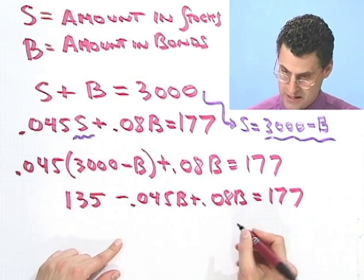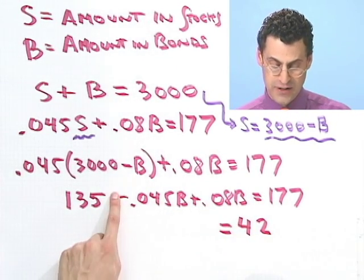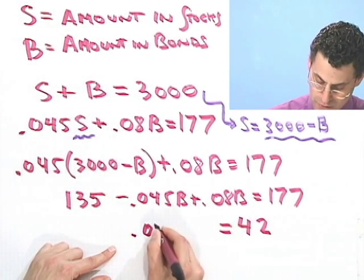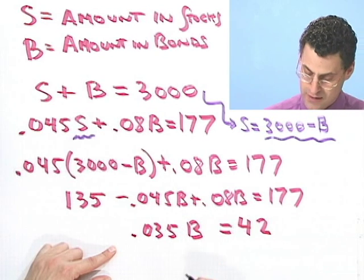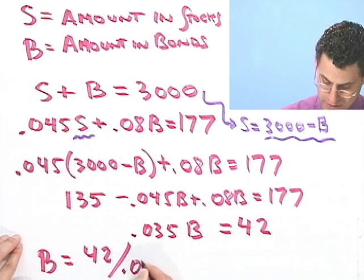And if I take 0.08 B and subtract off 0.045 B, I see I have 0.035 B. And so therefore B would be just 42 divided by 0.035.